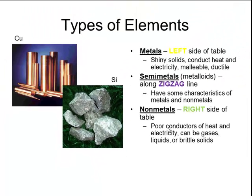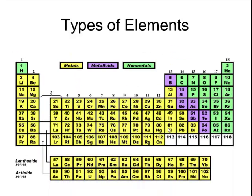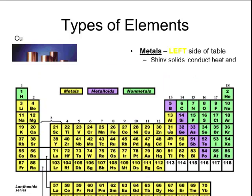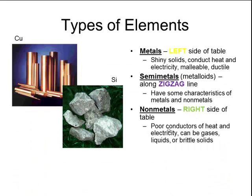On the far right-hand side of the table are all of the non-metals. So on this periodic table, all of the non-metals are in green on the far right. Those non-metals are going to be poor conductors of heat, poor conductors of electricity. They can be in any state. They can be gases, they can be liquids, or they can be solids. But notice those solids are usually brittle, meaning again that if you hit them with a hammer, they'll shatter into smaller pieces rather than flatten.